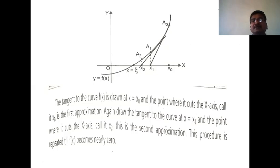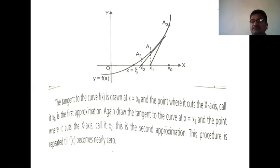If we observe, the difference between x₀ and xi is larger than the difference between x₁ and xi, which is larger than the difference between x₂ and xi. That is, x₂, x₃, x₄ go nearer to the exact root of the equation. This is the geometrical meaning of the Newton-Raphson method.